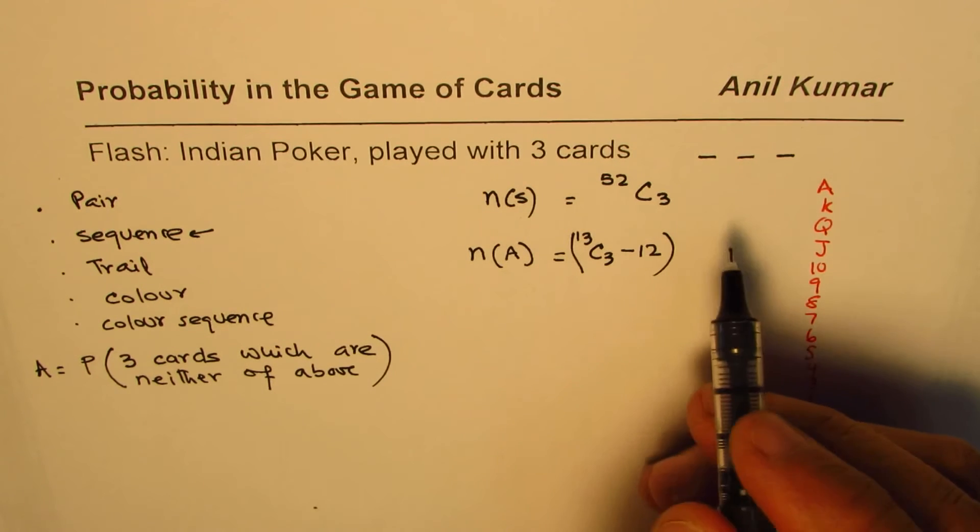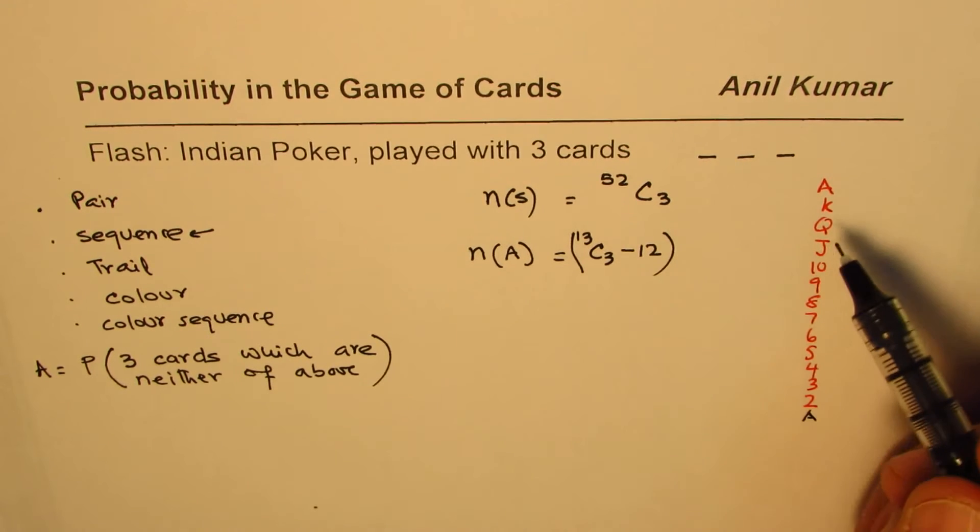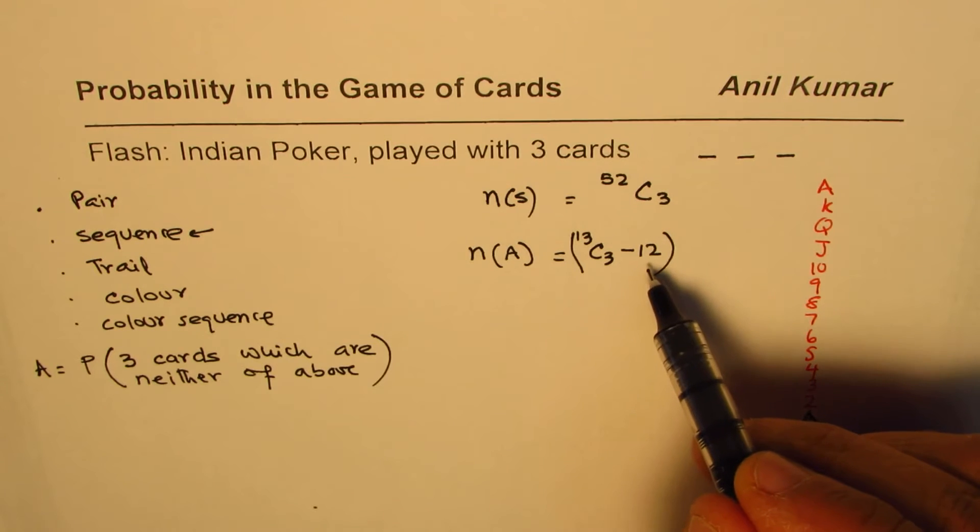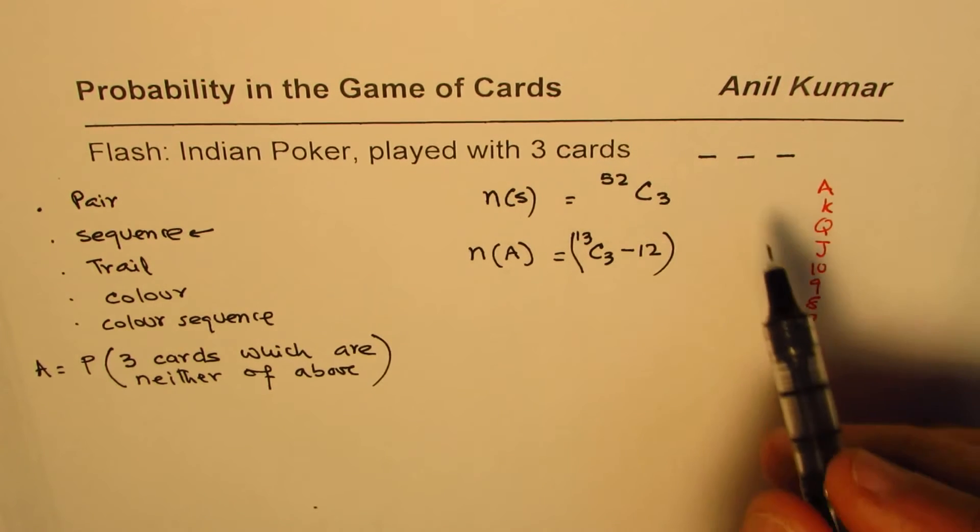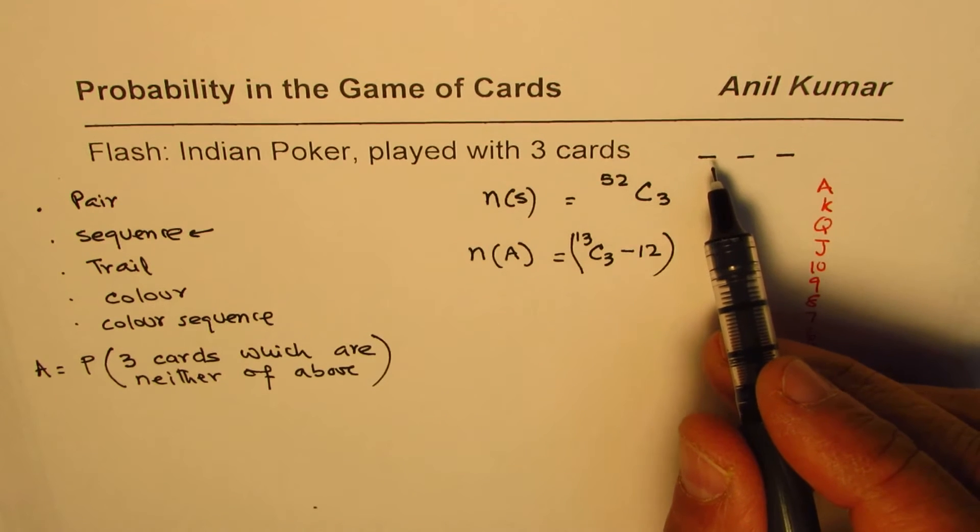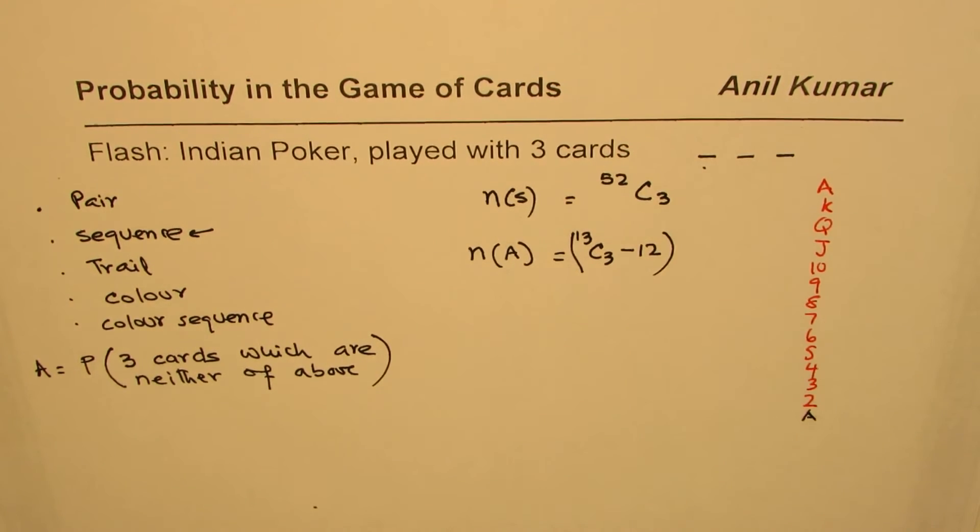That is one thing which we've taken care of. The other thing is now we'll select the colors. So we have selected the value of the card. Value of the card is such that we don't have them in order. 12 of those have been taken away. Now second step is to select the suit.